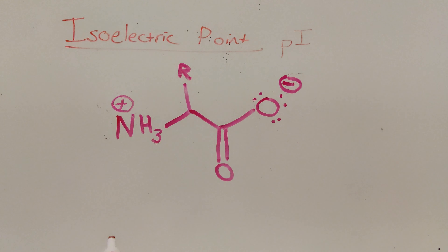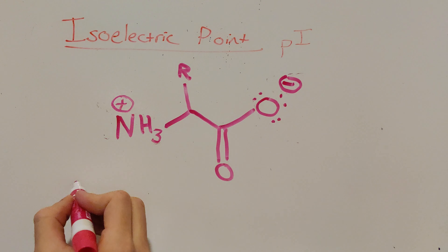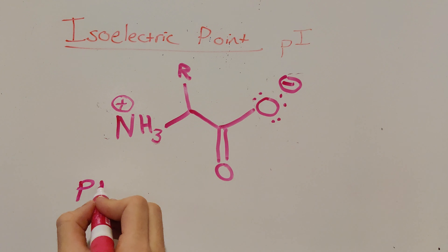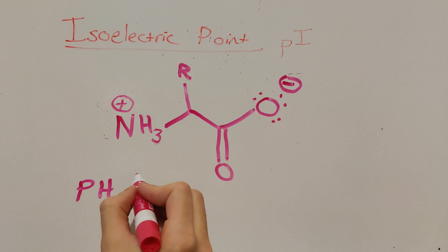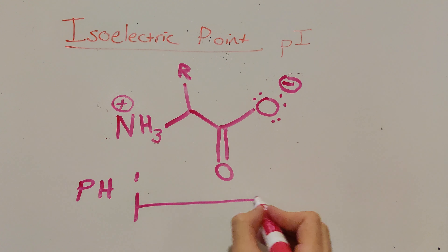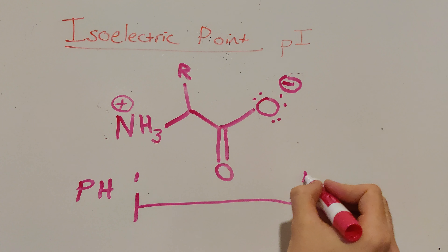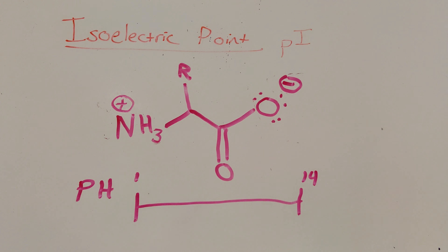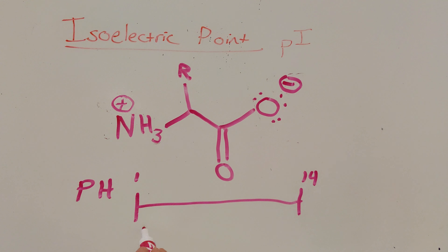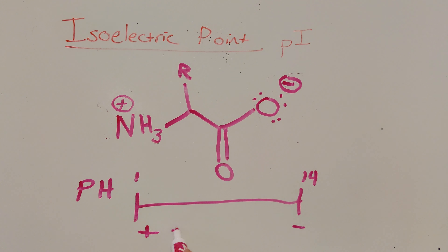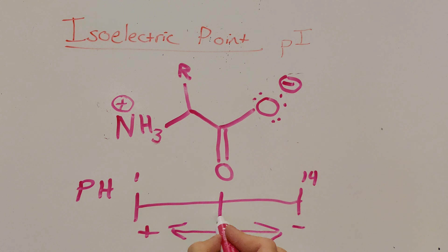Coming back to the pH scale: we know that at a certain pH we have a positive charge, and at a certain pH we have a negative charge. That means somewhere in the middle we would assume there would be a neutral charge — and this is in fact the case. At a pH of 1 we have a positive charge, at a pH of 14 we have a negative charge, and somewhere along this line in the middle we are going to have a neutral charge. That's our isoelectric point.